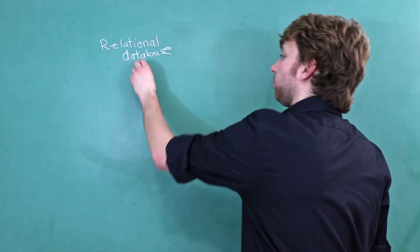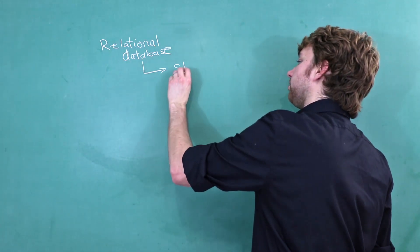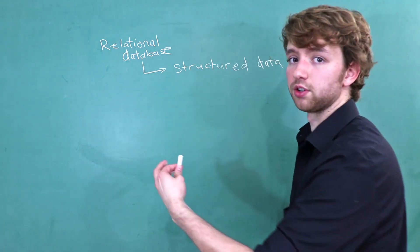DB2 is well known as a relational database. And what that means is it works with structured data. The other kind of data out there is unstructured data.